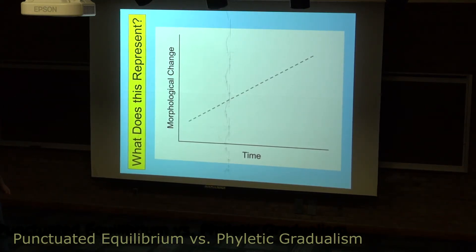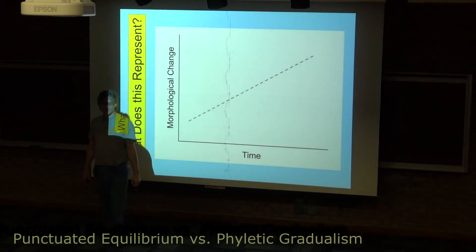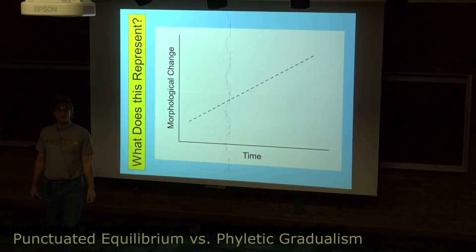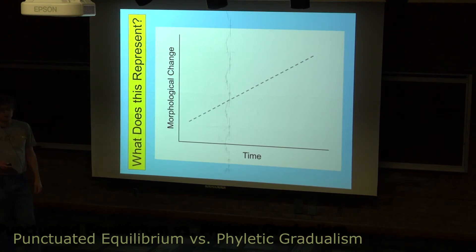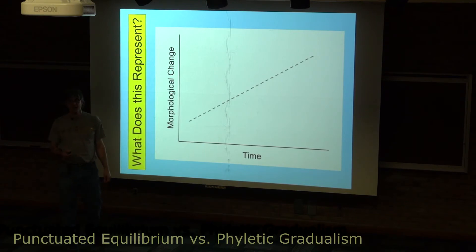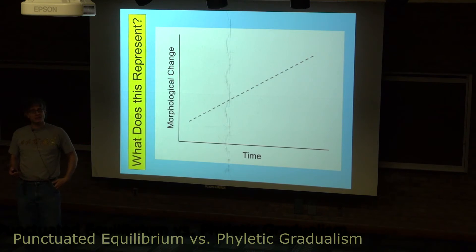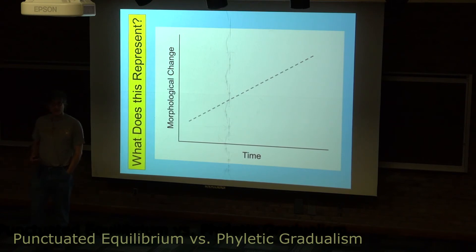Phyletic gradualism may or may not be true, but it represents a fairly constant rate of change over time. The important thing to keep in mind is that neither punctuated equilibrium nor phyletic gradualism is the truth. Real populations do change fairly slowly over long periods of time. They're not 100% constant.